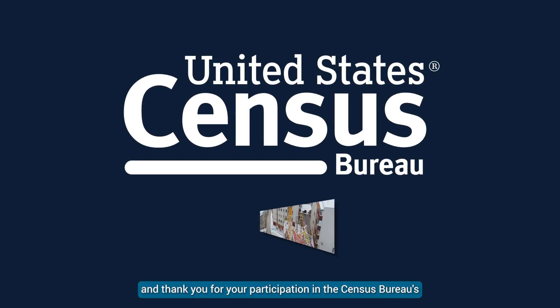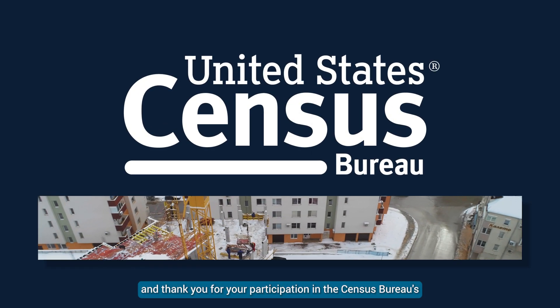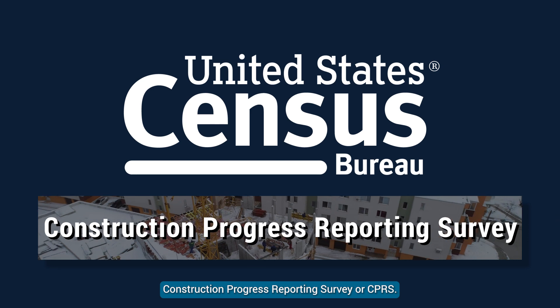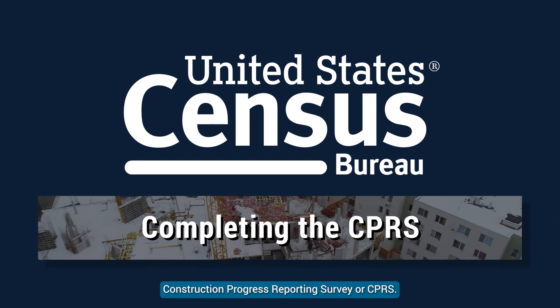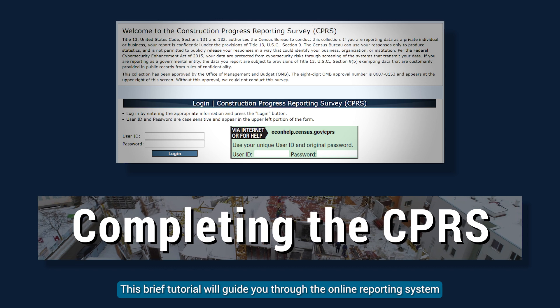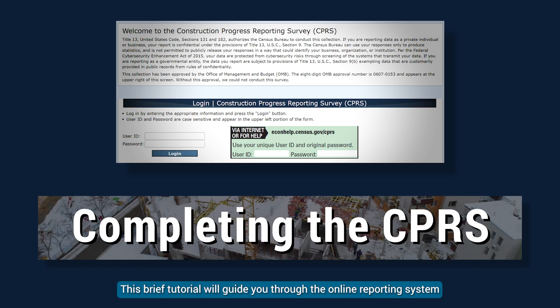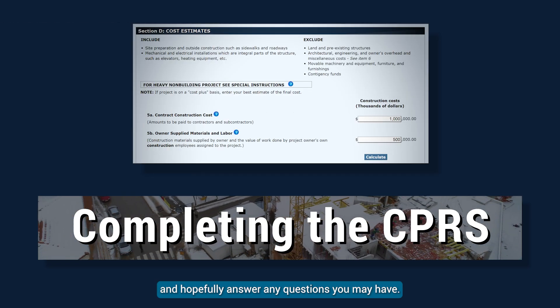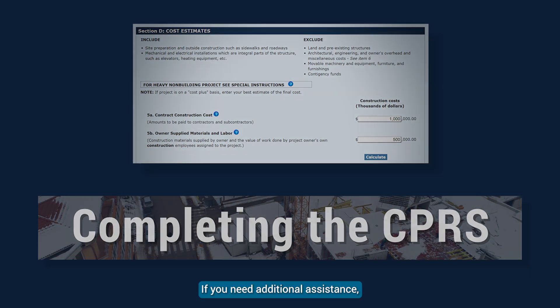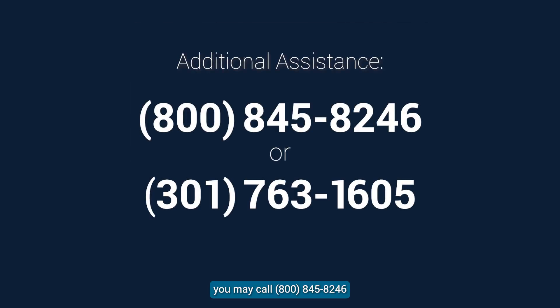Hello, and thank you for your participation in the Census Bureau's Construction Progress Reporting Survey, or CPRS. This brief tutorial will guide you through the online reporting system and hopefully answer any questions you may have. If you need additional assistance, you may call 800-845-8246 or 301-763-1605.